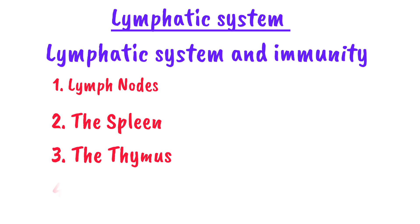Number four is the tonsils. They form a protective ring of tissue around the throat and trap bacteria and viruses from food and air, preventing infection from spreading. There are actually three types of tonsils: the palatine tonsils which we can see in our throat, the adenoid tonsils which are higher in the throat, and the lingual tonsils at the base of the tongue. The tonsils can sometimes become swollen or infected, and this condition is called tonsillitis.